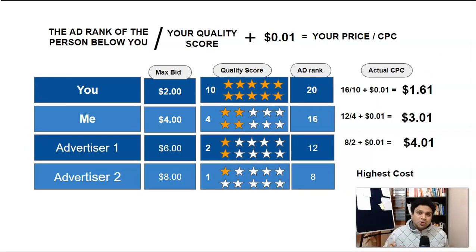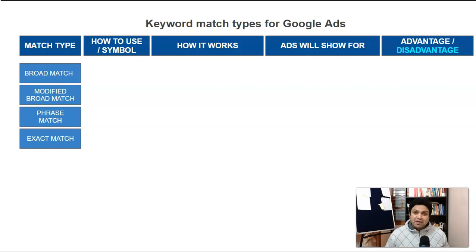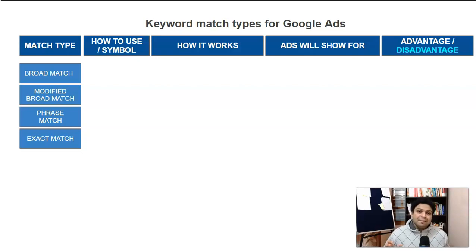In my last video I showed you how to rank your ad in the search engine result page so people click on your ad and buy your product. But now the most important thing is you should show your ad to the right audience. For that, you have to understand keyword match types for Google Ads, because keywords are what people use to search their queries, and knowing the right type helps you show your ad to buyer-intent audiences.